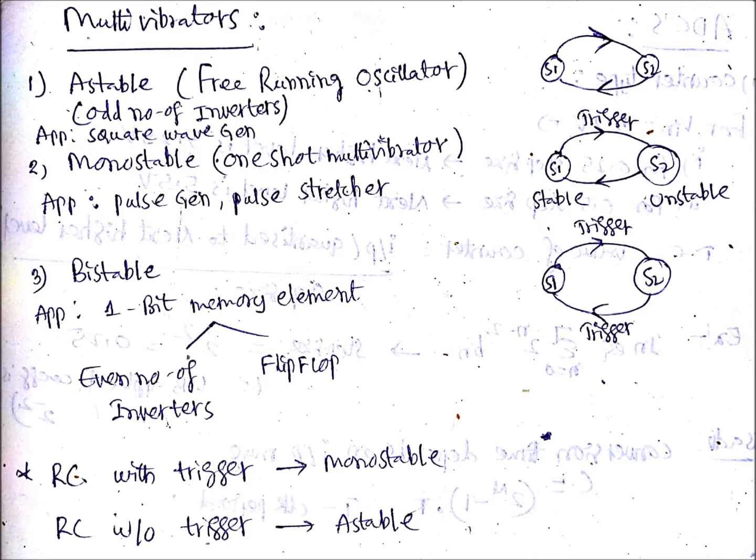Coming to multivibrators, there are mainly three types: astable, monostable, and bistable. The astable multivibrator is also known as a free running oscillator. How are you going to design an astable multivibrator? What is the basic idea behind the design?